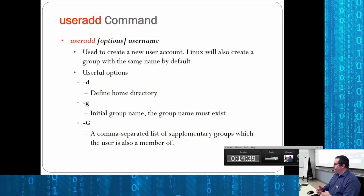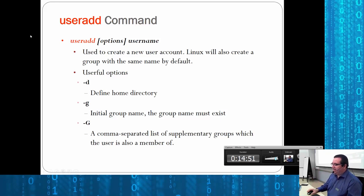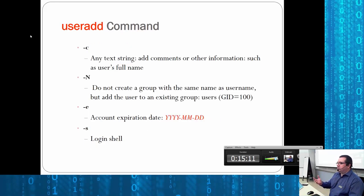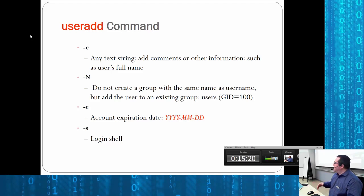The next command is useradd — it adds a user. It has several useful options: -d to specify a different home directory, -g to give an initial group name, capital -G to assign additional groups, -c to add a comment such as the person's nice name, and -n to not create a group with the same name as the username but instead add them to an existing group.